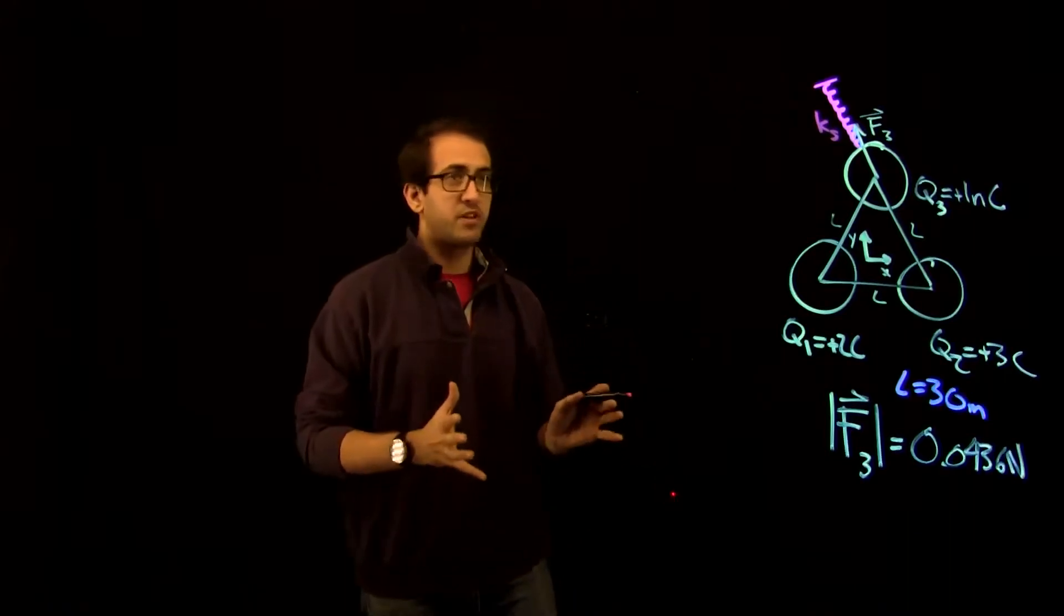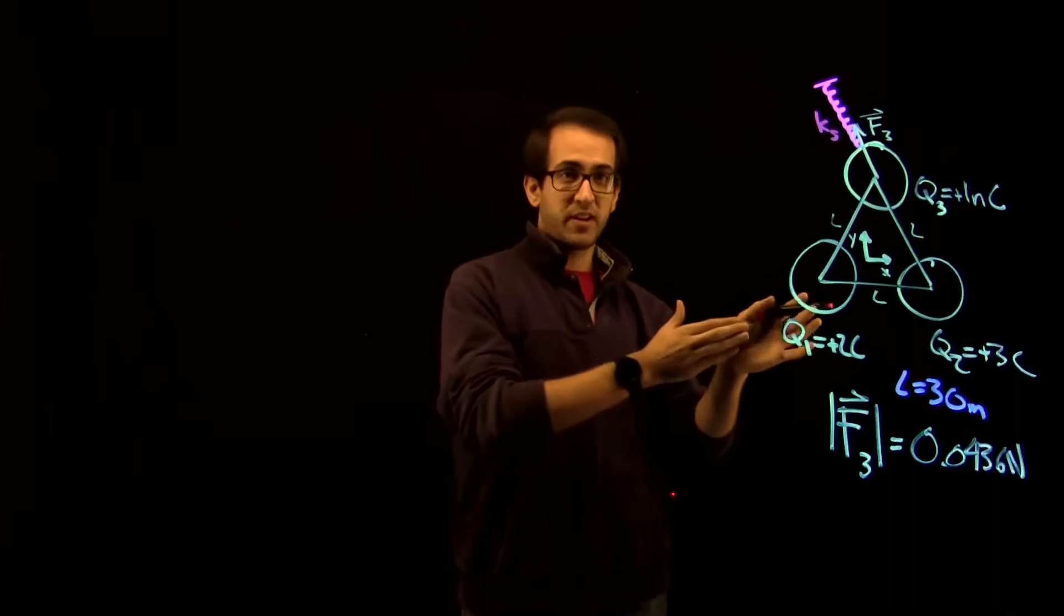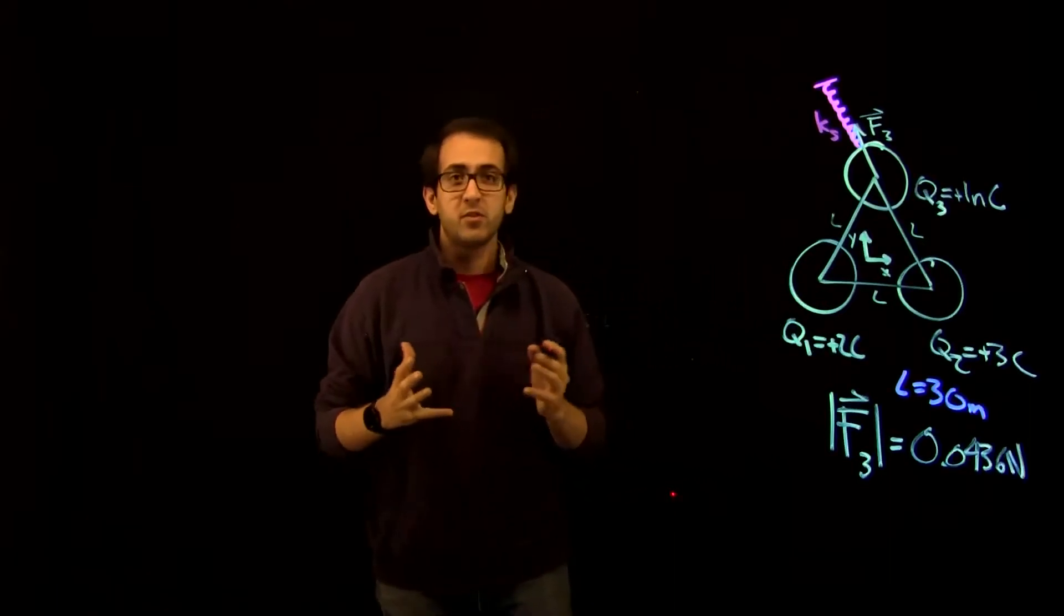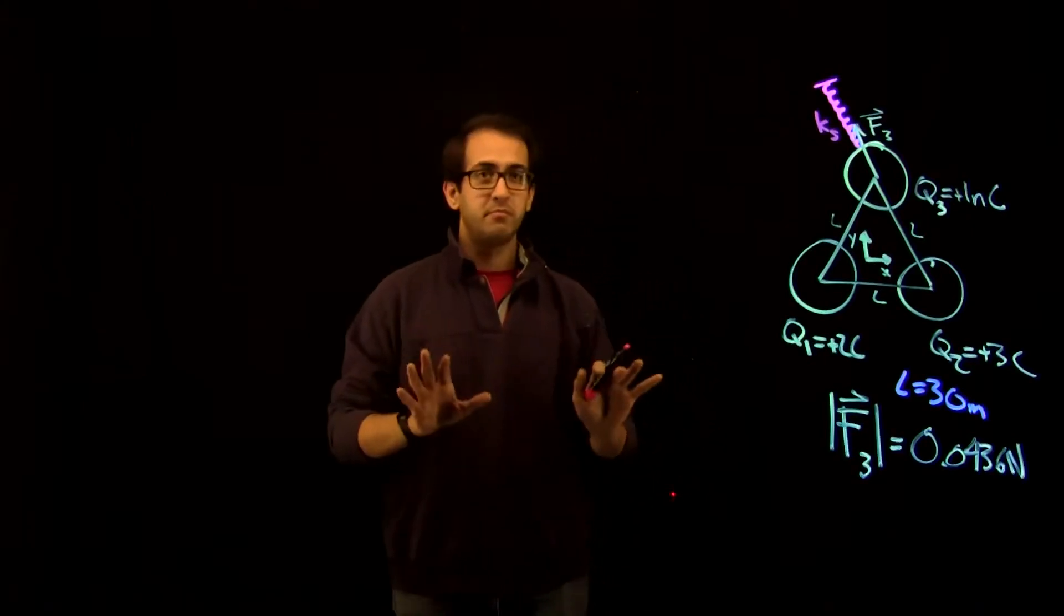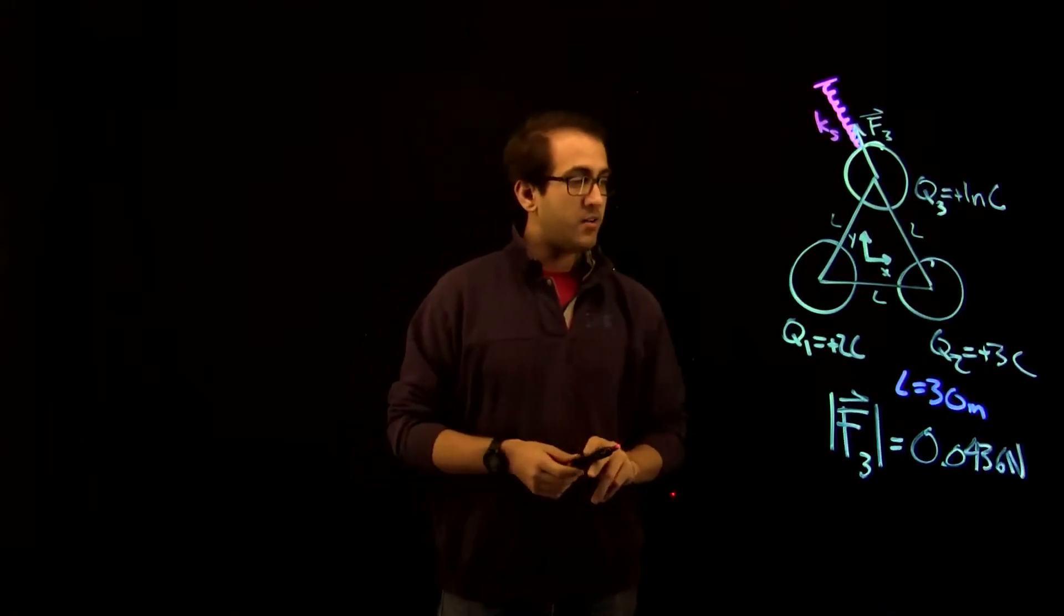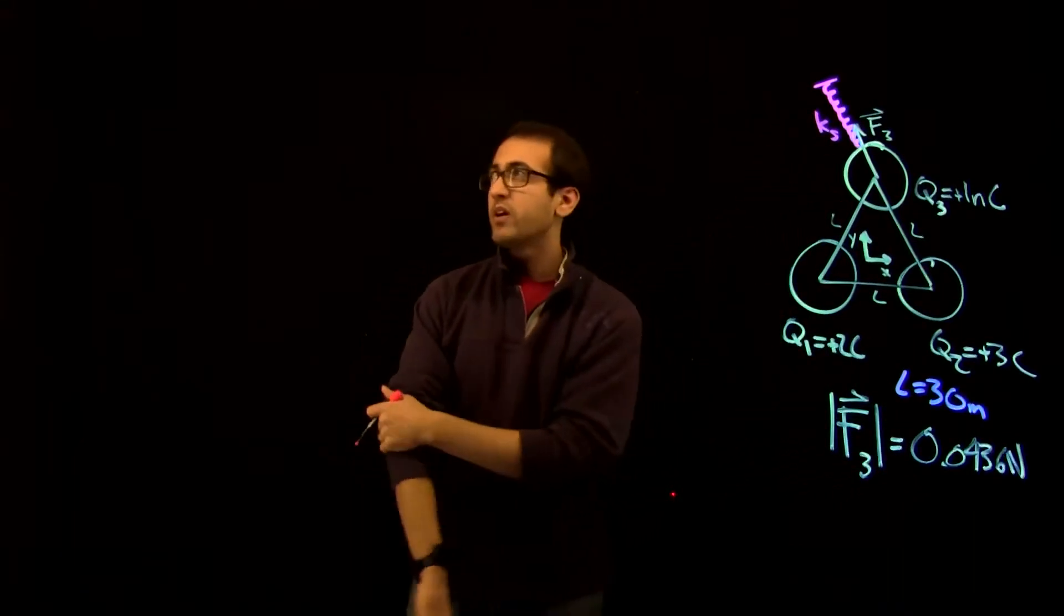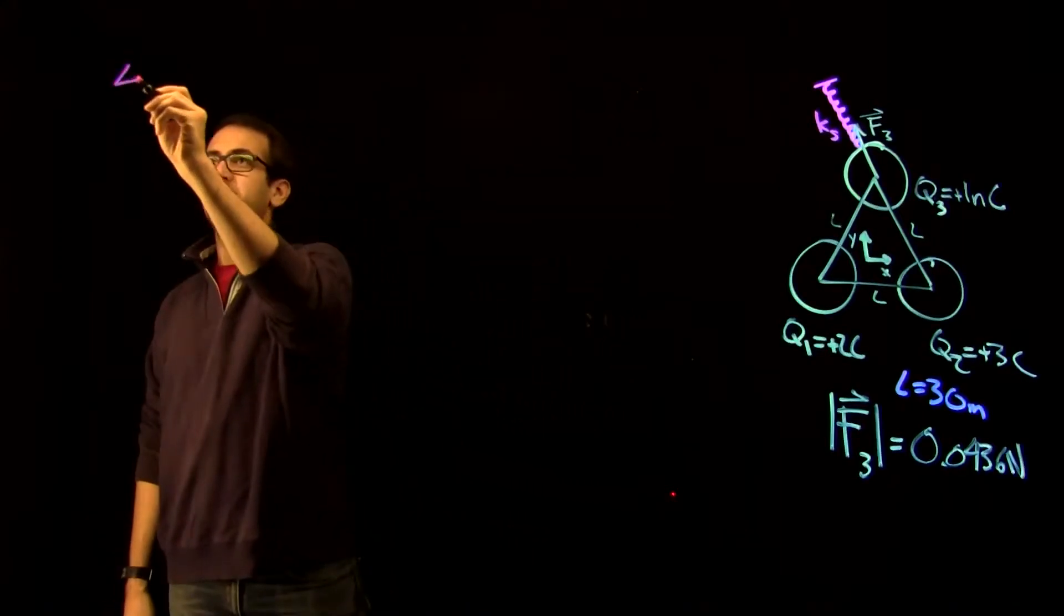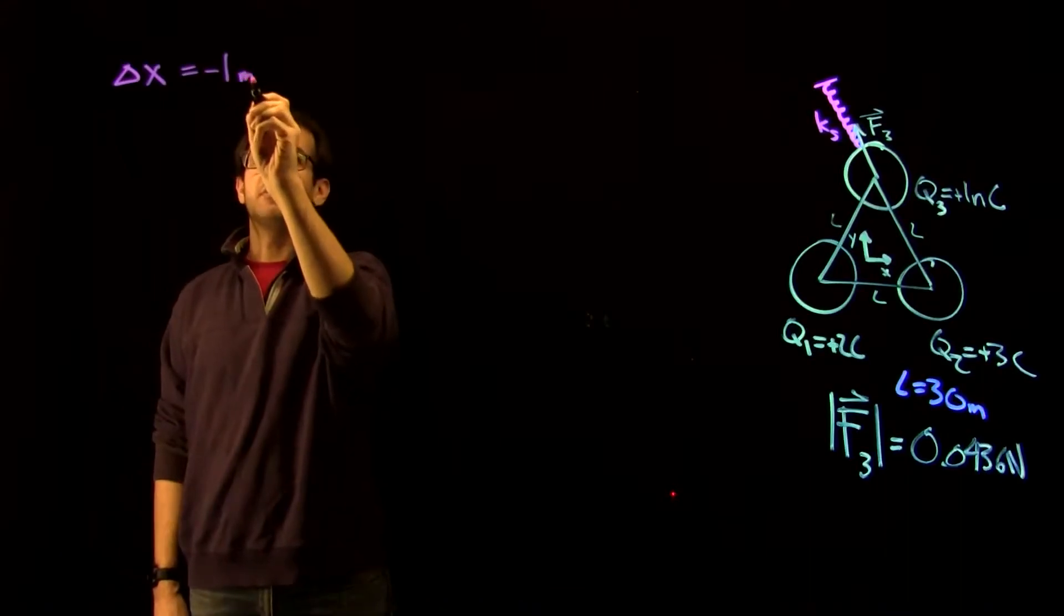Typically, we call the spring constant K. What we're going to do here is call it Ks, so K spring, because we also have the Coulomb constant, which is K. We'll call that K electrical. It's actually not going to come up in this problem, but for the sake of this, let's keep these various variables straight. So we know this, and we know that spring directly opposes that.